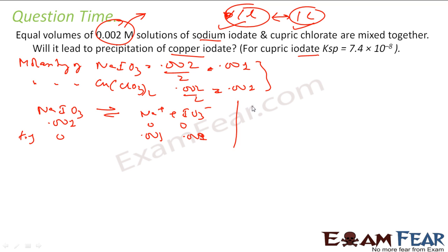Same thing for Cu(ClO3)2, this gives Cu2+ plus 2ClO3-. This was 0.001, this was 0 and this was 0. At equilibrium this becomes 0, this becomes 0.001, and this becomes 0.002. This will be the equilibrium concentration.